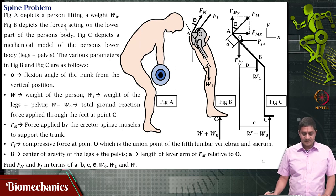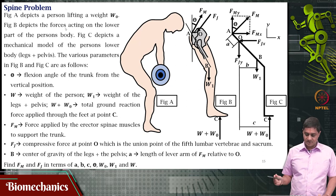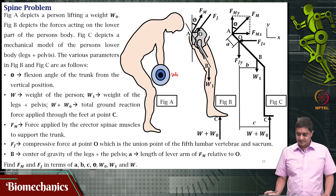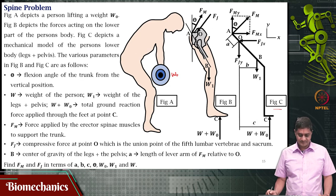Figure A depicts a person lifting a weight of W naught, which is the weight that this person is lifting. Figure B shows the forces acting on the lower part of that person's body. Figure C shows a mechanical model of the person's lower body, which is essentially the leg plus the pelvis. The parameters marked in figures B and C are given or described here.